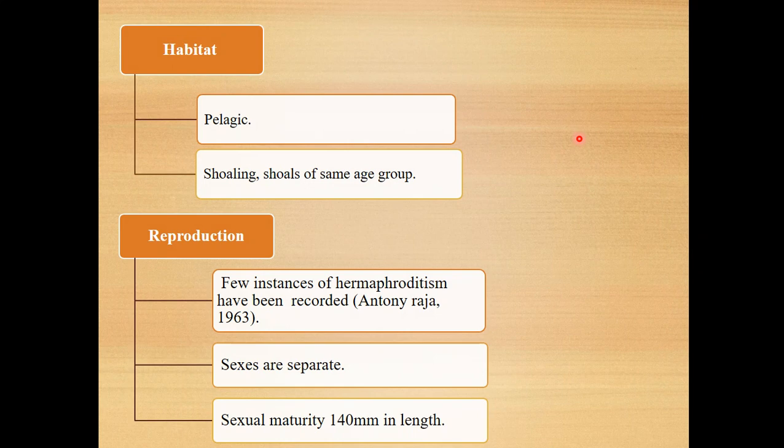About reproduction: a few instances of hermaphroditism have been recorded by some scientists in 1963, but sexes are generally separated. Sexual maturity occurs at 140 mm in length. The sexes in oil sardine can be externally distinguished by the presence of a papilla, which in the male is muscular and situated inside the cloaca. In the female, it is membranous, positioned behind the anal opening. In both sexes, it is prominently visible in spent and recovering specimens.